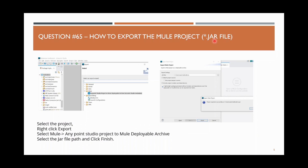So how do we do it? Select the project, right-click, and click export. Once you click export, a dialog box will appear where under Mule you have to choose 'Anypoint Studio project to Mule deployable archive'.